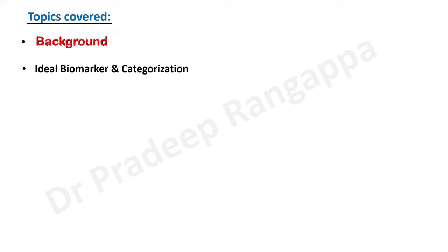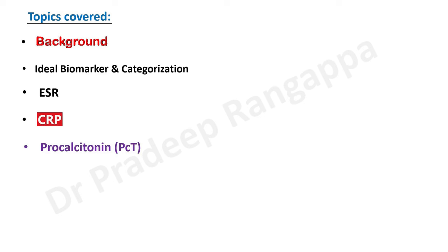The topics I would be covering are: background on biomarkers — why we need them and what makes the ideal biomarker — and the categorization of biomarkers. There are around 170 to 180 biomarkers, and we need to categorize them into different groups for clarity as to their origin. Starting with basic biomarkers: ESR, CRP — a traditional marker that saw resurgence during COVID — then procalcitonin, which has good evidence for utility in sepsis.